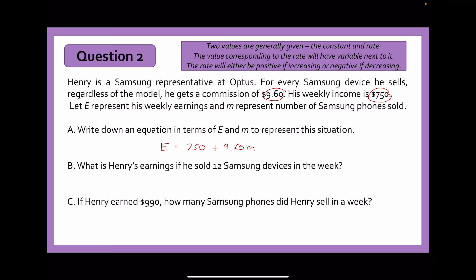For question B: what is Henry's earnings if he sold 12 Samsung devices? We substitute M equals 12, so E equals 750 plus 9.60 multiplied by 12. Putting that into the calculator you get an answer of $865.20.